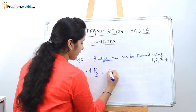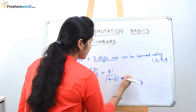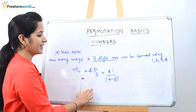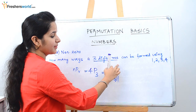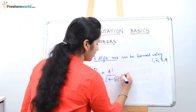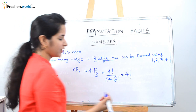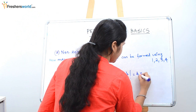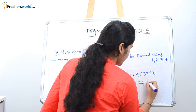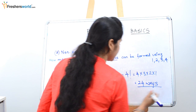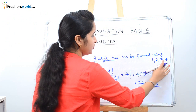So 4 factorial divided by (4−3) factorial. Once you solve this, you get the answer for the number of ways a three-digit number can be formed using 1, 2, 3, 4, which is 4 factorial. We know 4 factorial is 4 × 3 × 2 × 1, which equals 24. So there are 24 ways a three-digit number can be formed using 1, 2, 3, 4.